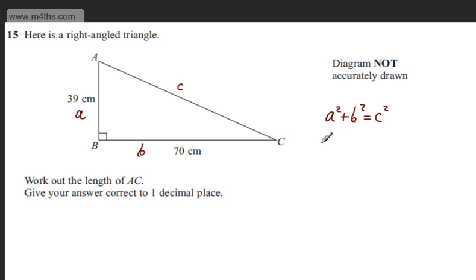So all I'm going to write then is that AC squared, which is c squared, is equal to 39 squared plus 70 squared.